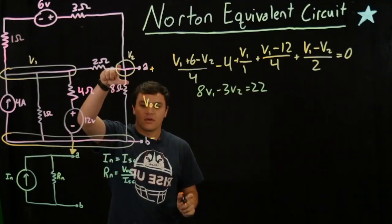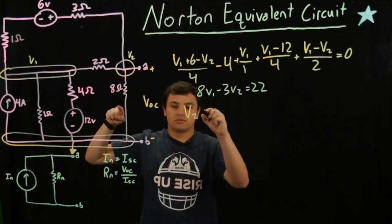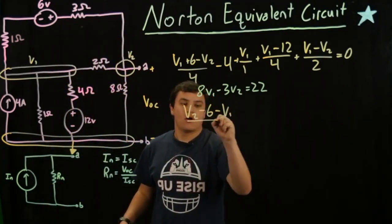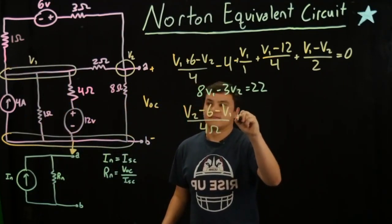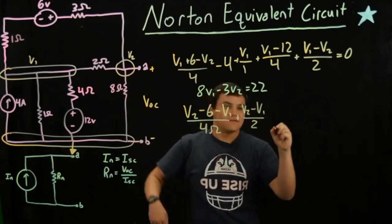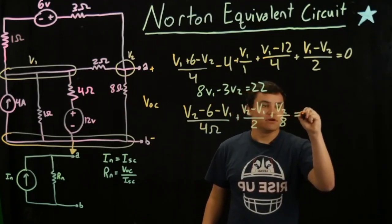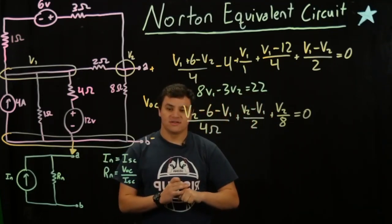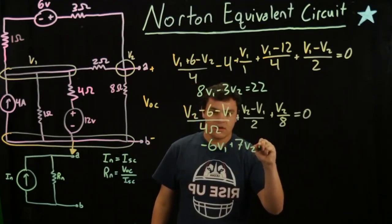Now we go to our second node. We have V2 minus 6 volts, because we're going from this side, minus V1, all over 4 ohms in series, plus V2 minus V1 all over 2 ohms. Our final current is V2 minus 0 over 8, equals 0. Doing some algebraic simplifications, we get minus 6 volts minus 6V1 plus 7V2 equals 12.